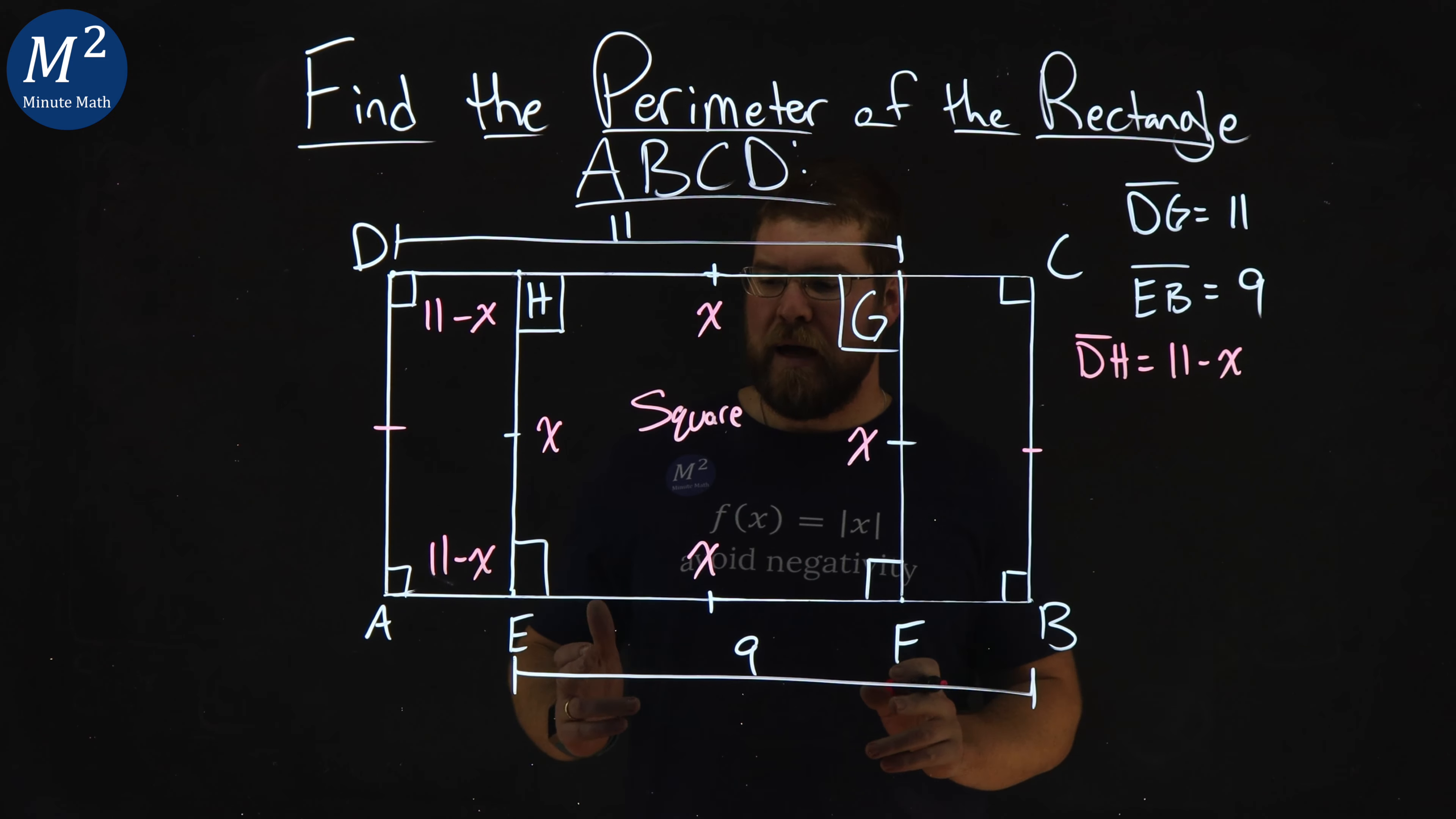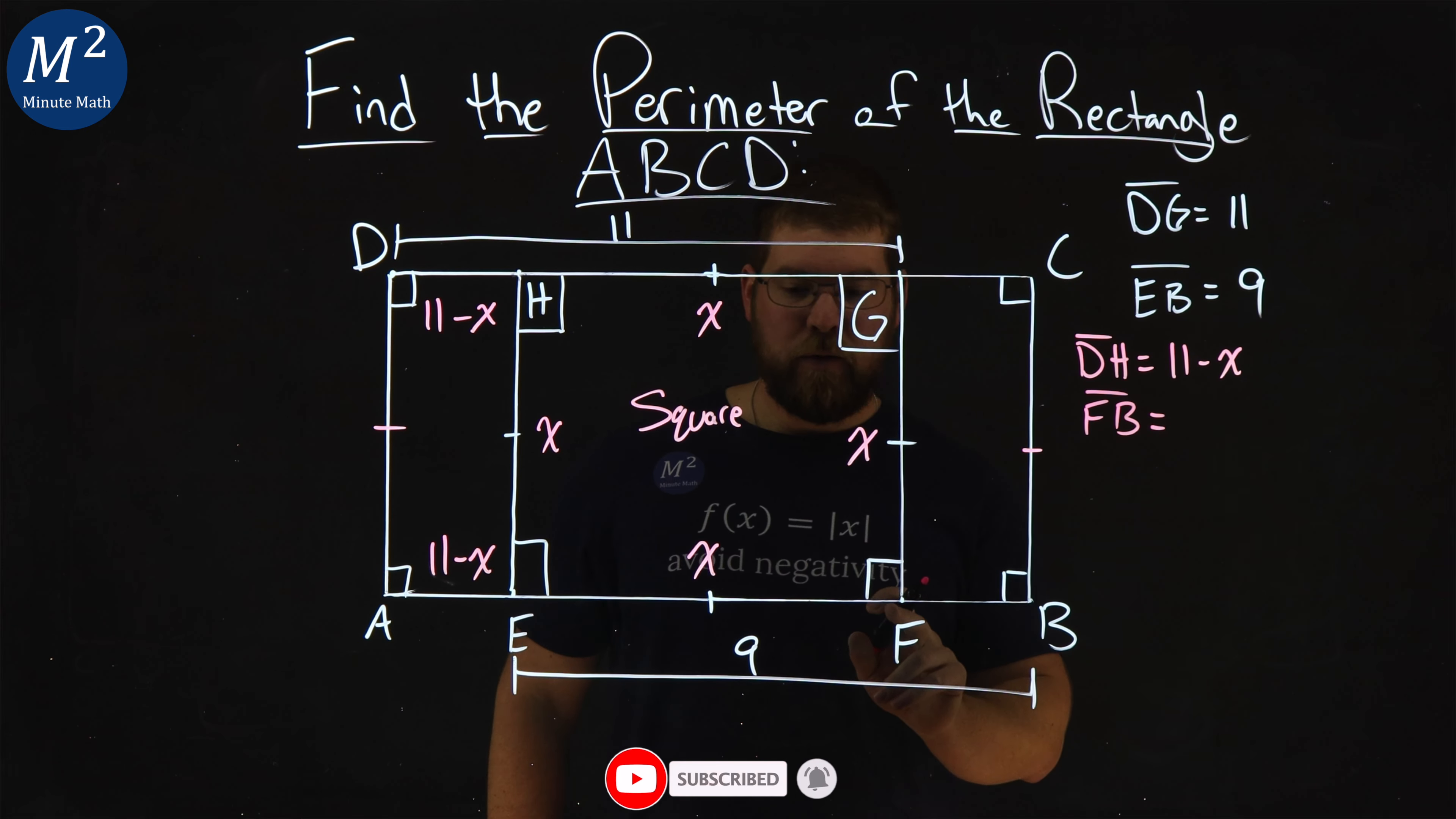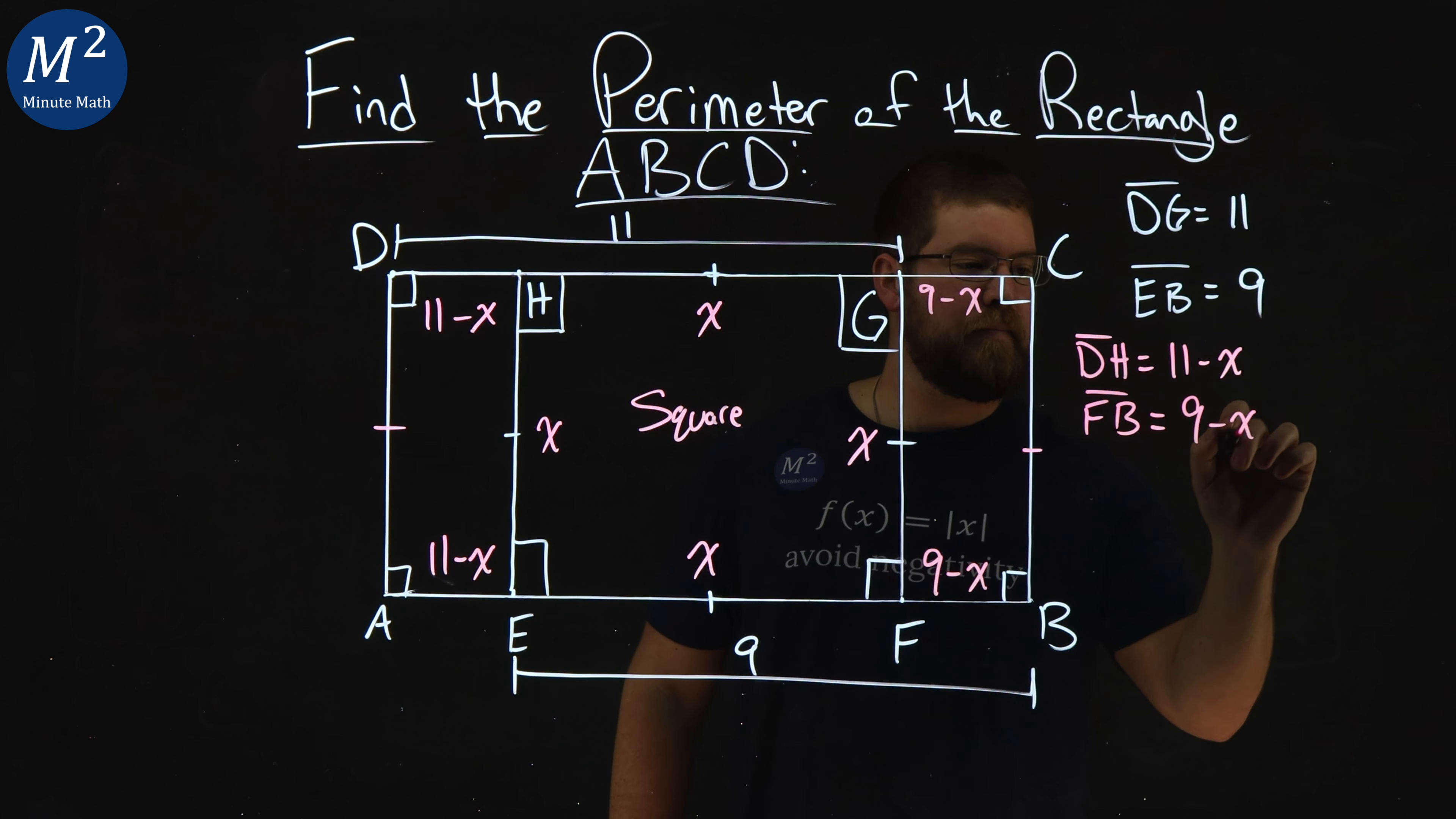Now, let's apply the same idea here from EB. If the length of EB is equal to 9, and the length of EF is X, the length of FB is equal to, well, 9 minus X. Now, the same idea here, we can apply that 9 minus X also is the distance of GC. 9 minus an X.